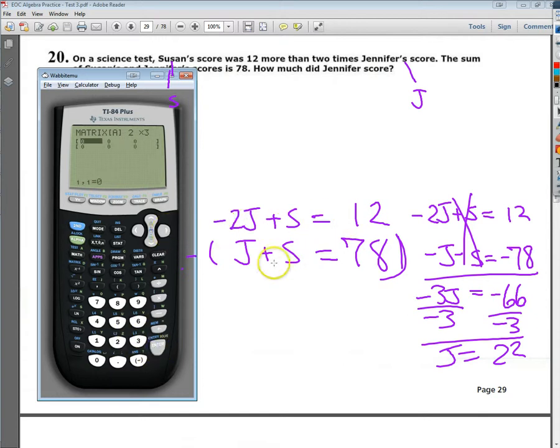So I'm just going to type in what it was originally before I even did the multiplication. So negative 2, there's a 1 in front of the S even though it's not shown, 12, and then 1J, 1S gave me 78.